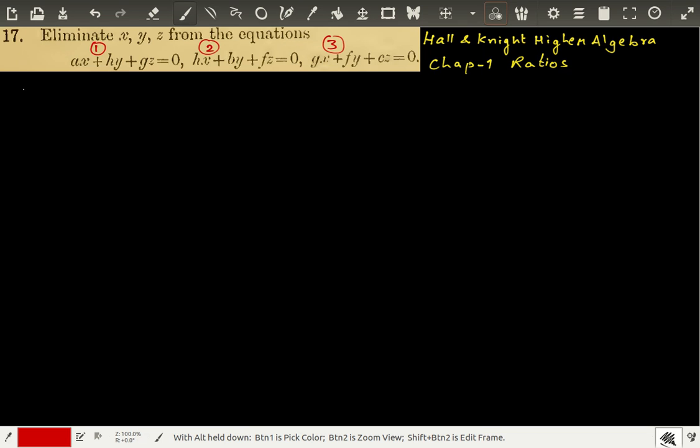From equation 2 and 3, from 2 and 3, we get x over... okay, we have b, let us write it. hx plus by plus fz equals 0. So, gx plus fy plus cz equals 0.